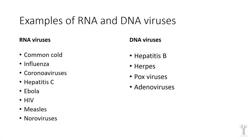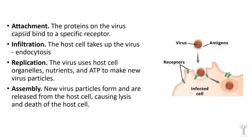Here are some examples of different viruses that are either RNA viruses or DNA viruses. When a virus infects our cell, it has to have antigens that match a receptor. There are basically four steps that occur when a virus infects a cell. Number one: the virus has to attach — the antigen has to match the receptor. Then it will infiltrate, meaning it goes inside the cell. When the virus binds to a receptor, it triggers the cell to cause endocytosis or phagocytosis, engulfing the virus particle and bringing it into the cell.